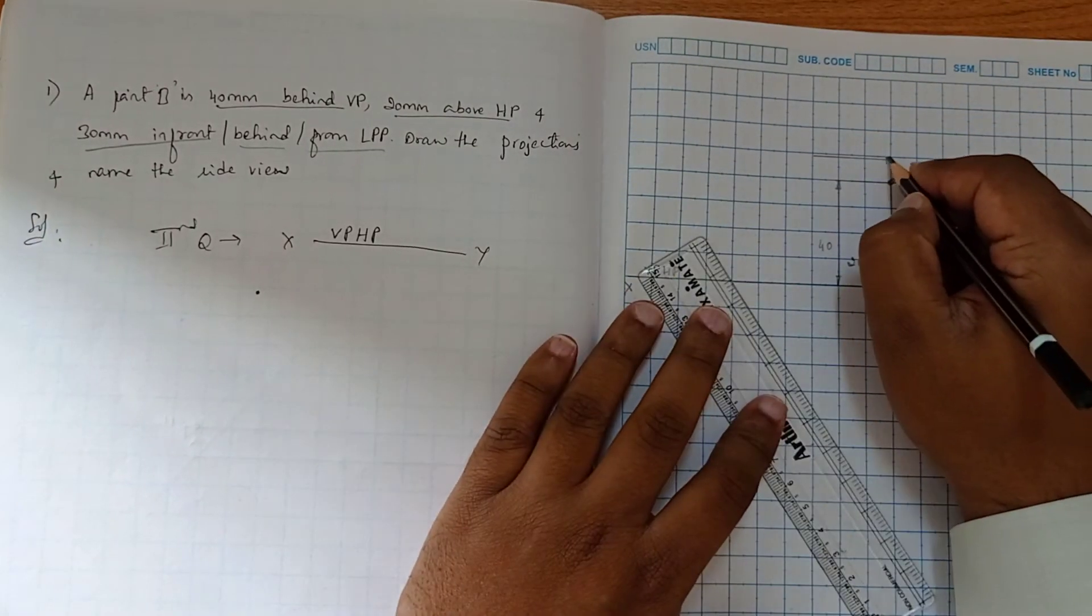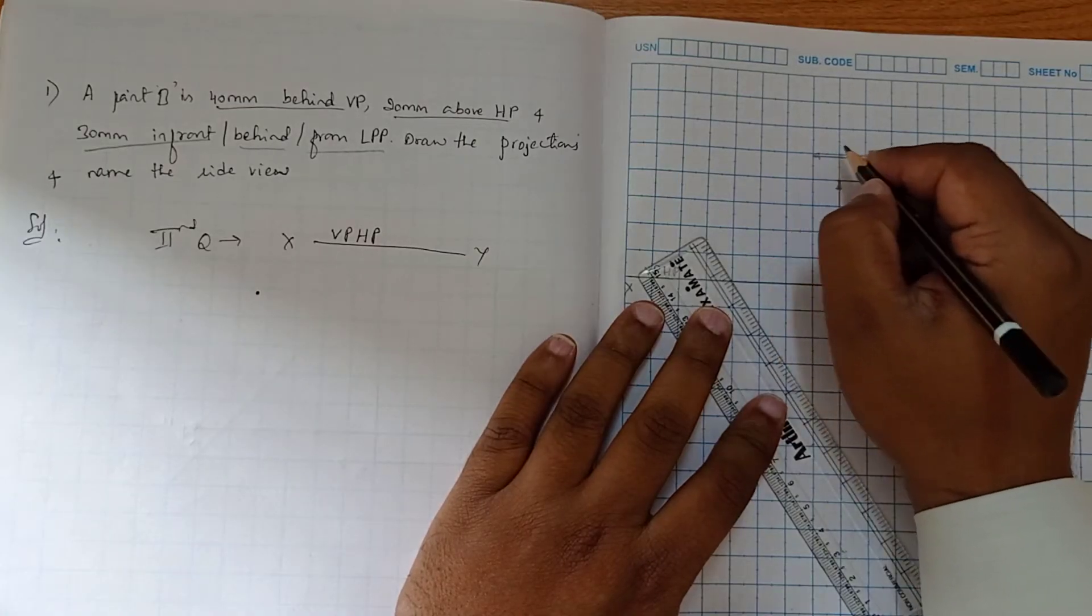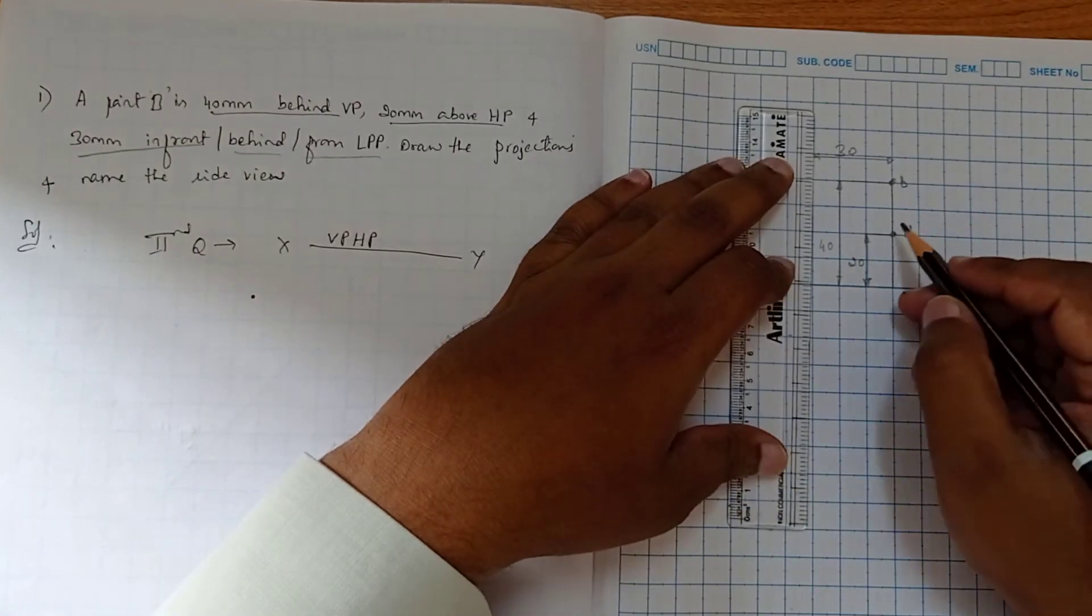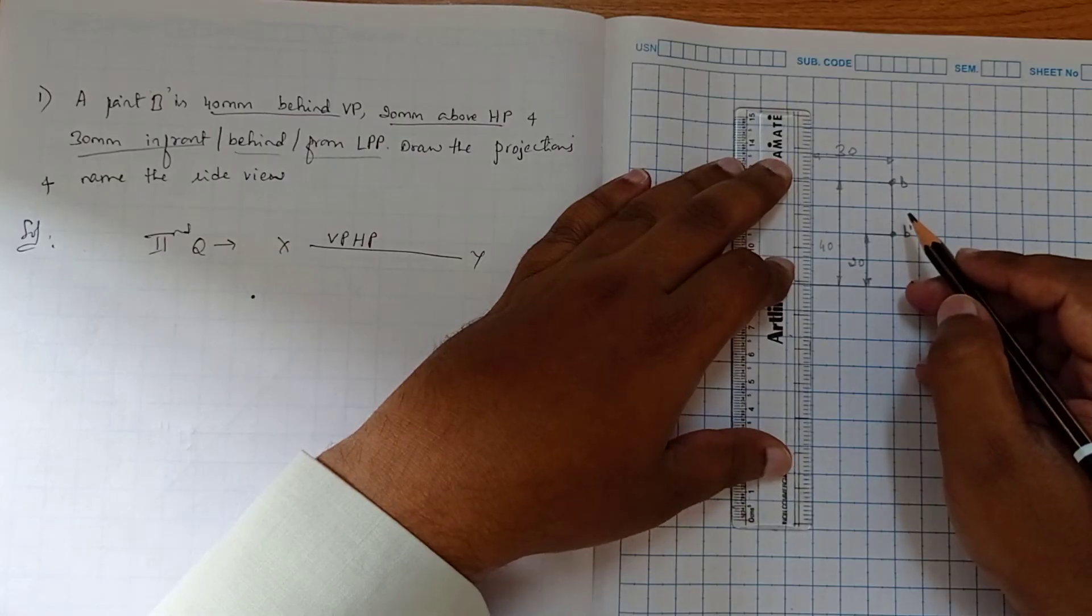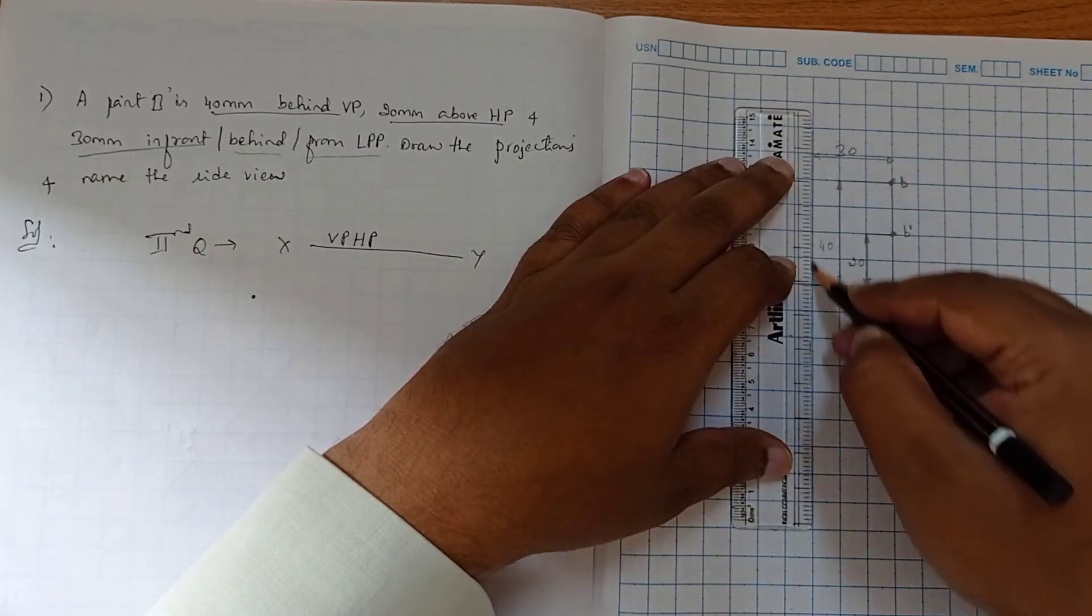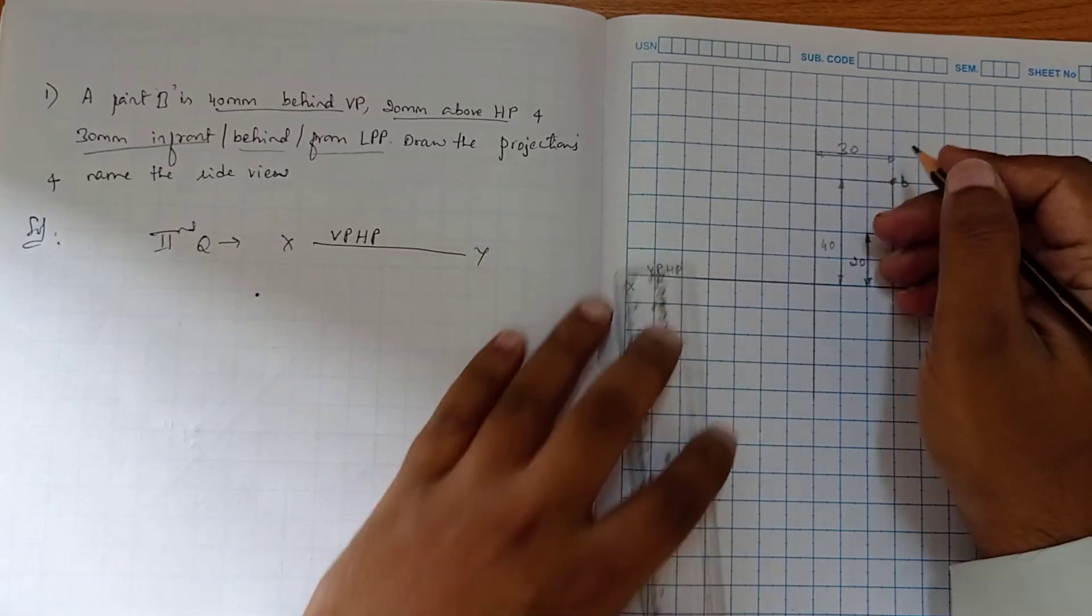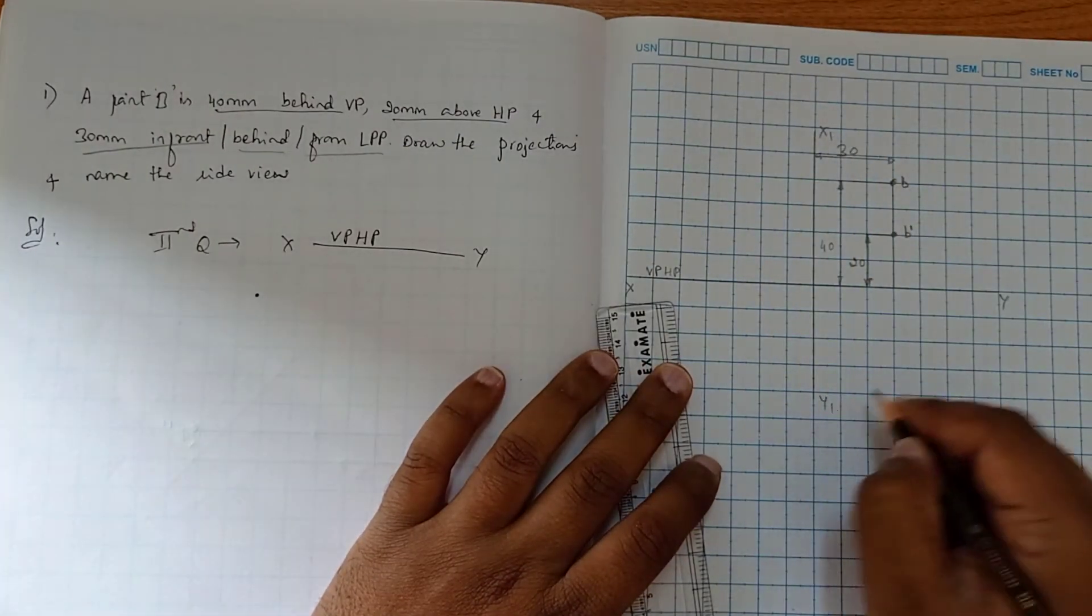We will be drawing here a dimension line, that is 30. So here exactly giving three boxes, that is 30mm. We will be drawing a projection profile plane, that is x1 y1, LPP - that is left profile plane.